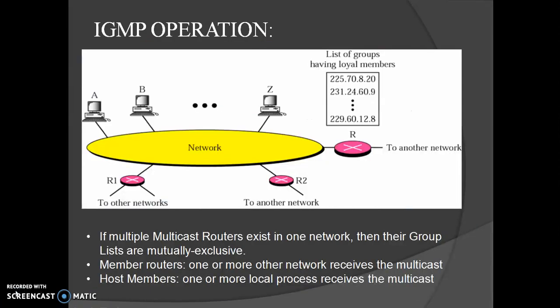IGMP operates locally. A multicast router connected to a network has a list of multicast addresses for groups with at least one loyal member in that network. For each group, there is one router with the duty of distributing multicast packets destined for that group. This means that if there are three multicast routers connected to a network, their lists of group addresses are mutually exclusive. A host or multicast router can have membership in any group. When a host has membership, one of its processes receives multicast packets for that group. When a router has membership, a network connected to one of its other interfaces receives those multicast packets.